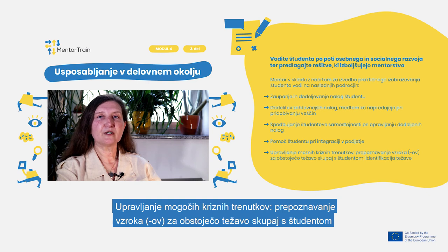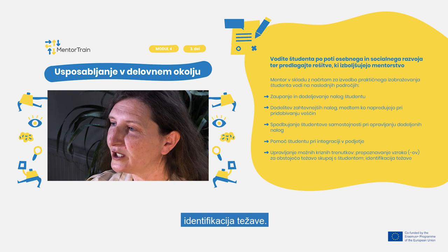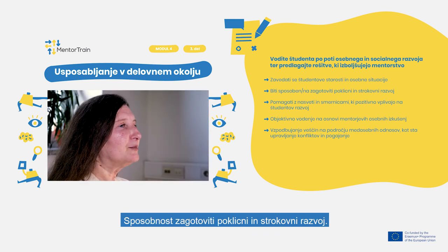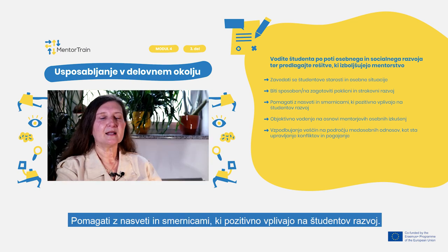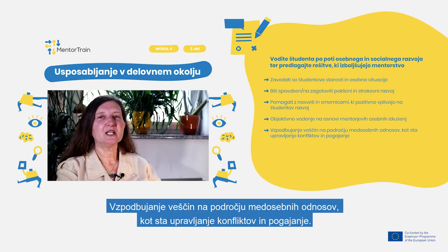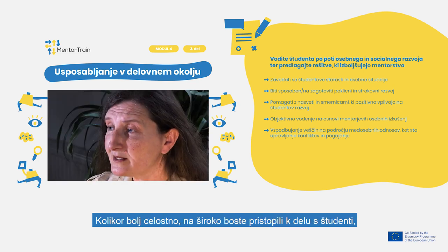Further checklist items include: managing possible crisis moments, identifying the cause of current problems together with the apprentice, identifying where the problem is, being aware of the apprentice's age and personal situation, being able to provide career and professional development, helping with advice and guidance that positively influence their evolution, and offering objective guidance based on the personal experience of the mentor.